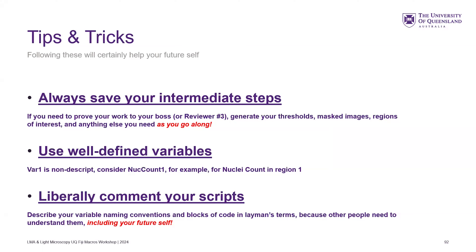You need to prove your work to your boss or reviewer. Where are your thresholds? Were you generating good results? If you just output a spreadsheet with all the numbers and suddenly image five has like 10,000, you need to know what's going on there. It'd be really good to also save the output of five of the intermediate images to see what's happening and why.